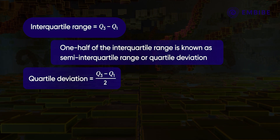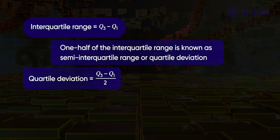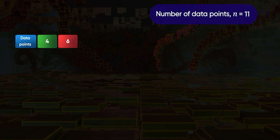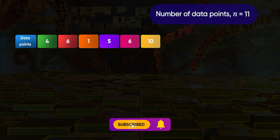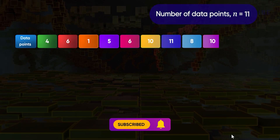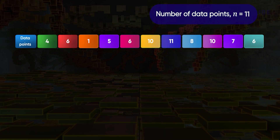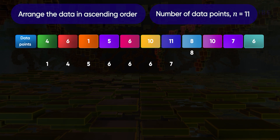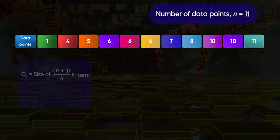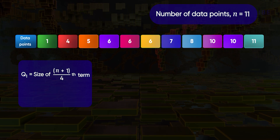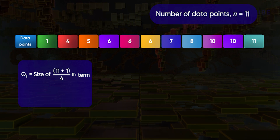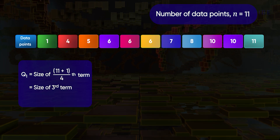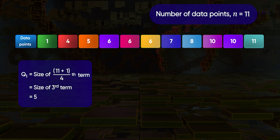Consider the set of eleven data points: 4, 6, 1, 5, 6, 10, 11, 8, 10, 7, and 6. As the first step, arrange the data points in ascending order. The first quartile Q1 is at position (11+1)/4, that is the 3rd term, which is 5. So Q1 equals 5.